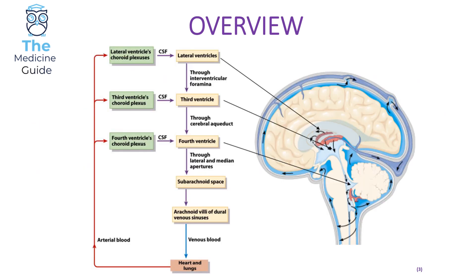Let's familiarize ourselves with the pathway of CSF. CSF is produced by the choroid plexus in the lateral, third, or fourth ventricle. Focusing on the lateral ventricle: CSF flows into the third ventricle via the interventricular foramina, then into the fourth ventricle through the cerebral aqueduct, into the subarachnoid space via the lateral and median apertures, then into the arachnoid villi of the dural venous sinuses, and finally drains into venous blood transported to the heart and lungs. One key function of CSF is to lubricate and protect the brain.